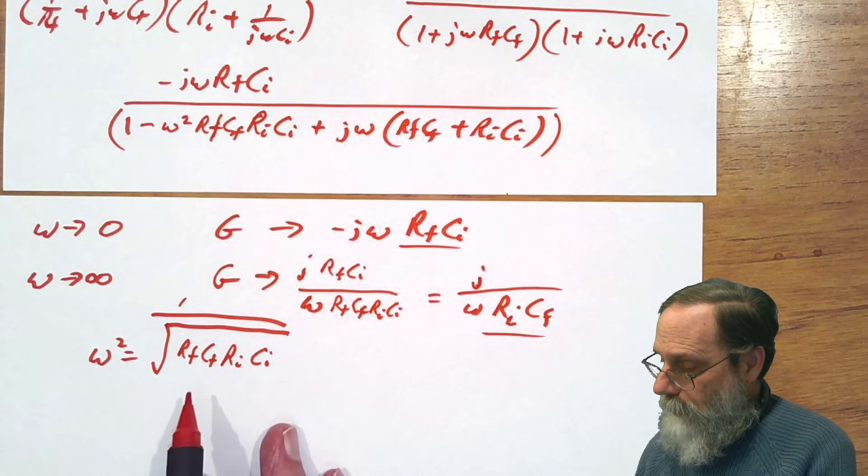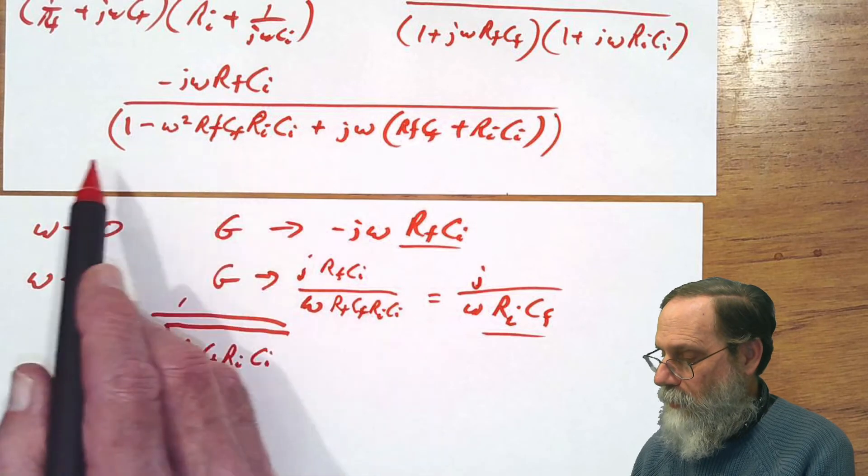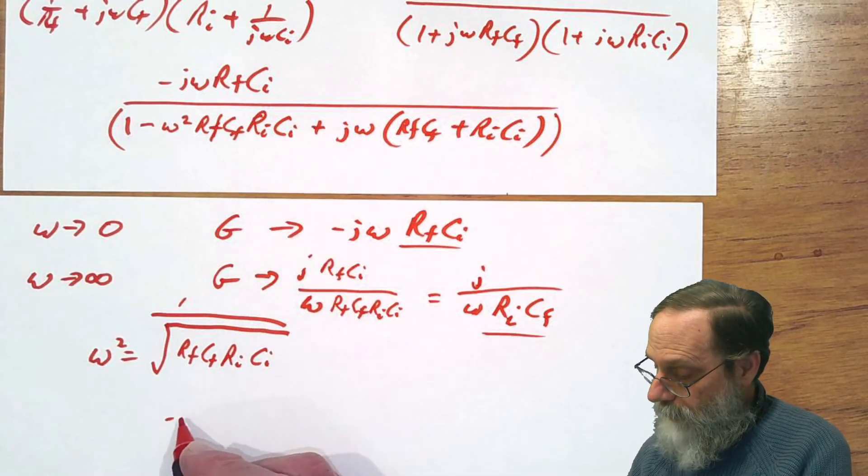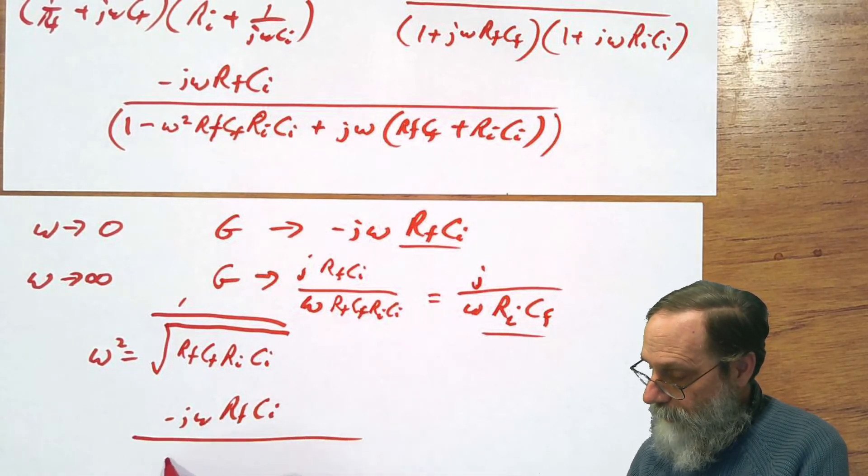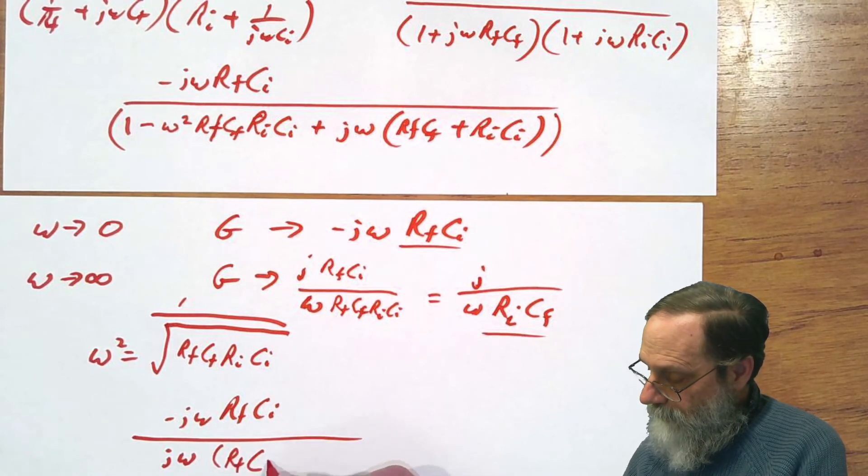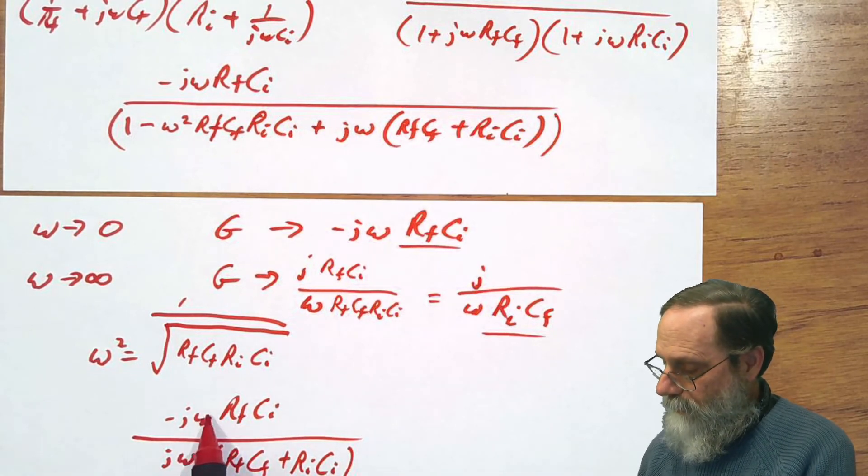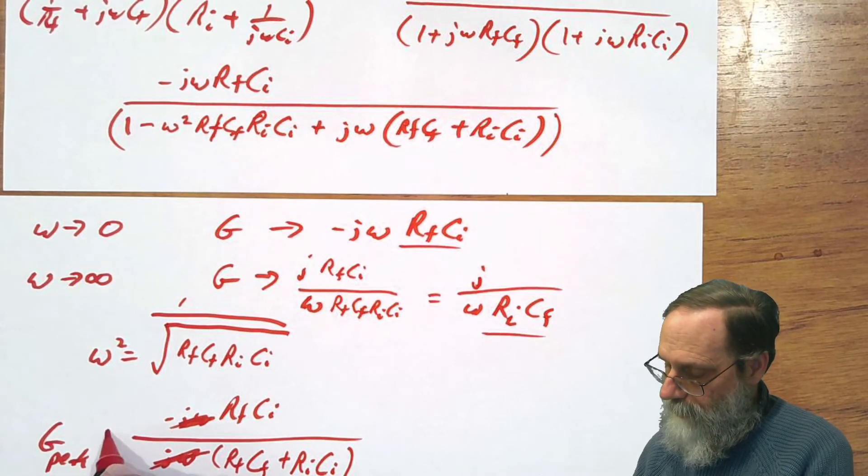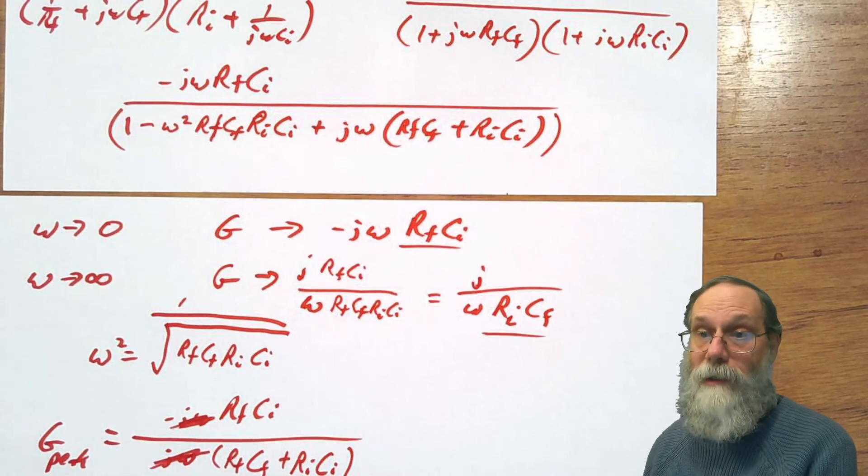We should probably figure out what the gain is at that peak. Probably the easiest way to do this - you can see that this real part will go away there. So at that point we will have minus j omega Rf Ci over Rf Cf plus Ri Ci. And we can cancel the j omegas. So this is the peak gain - a purely real number minus Rf Ci over Rf Cf plus Ri Ci.